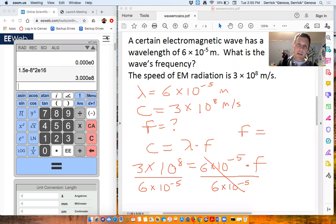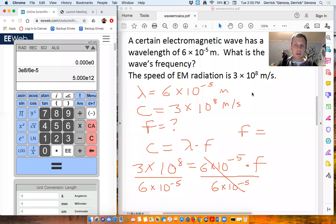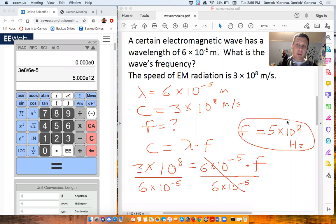So I'm going to go to my calculator. Clear it. I'm going to do 3 times 10 to the 8th. Just 3e8 divided by 6e negative 5. And I get 5 times 10 to the 12th. So my frequency of this is 5 times 10 to the 12th. And it's a frequency. So it'll be in Hertz.